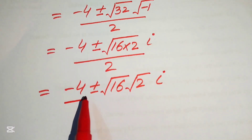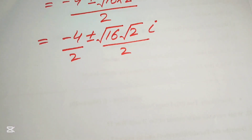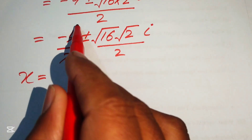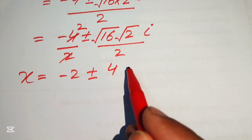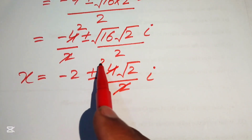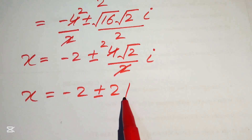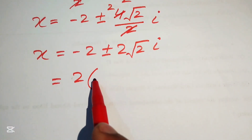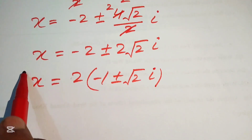Breaking the fraction, the negative 4 divided by 2 gives negative 2, and square root of 16 equals 4, so we have negative 2 plus or minus 4 times square root of 2 times i, divided by 2. This simplifies to x equals negative 2 plus or minus 2 times square root of 2 times i. Taking out the factor of 2 gives x equals 2 times negative 1 plus or minus square root of 2 times i.